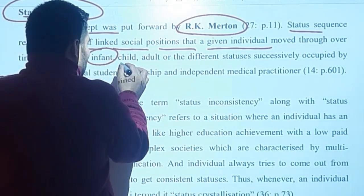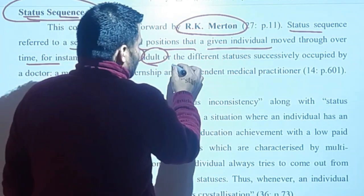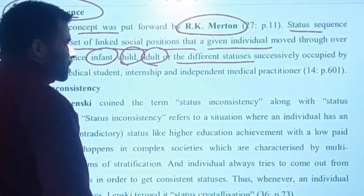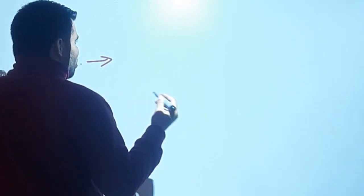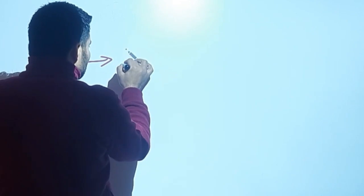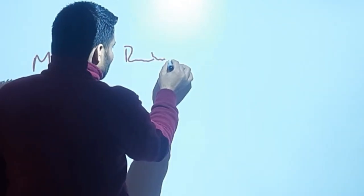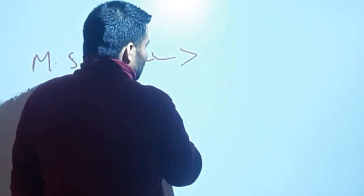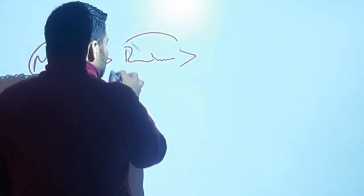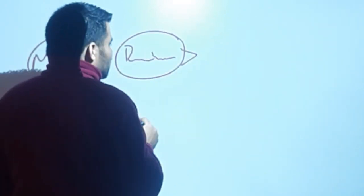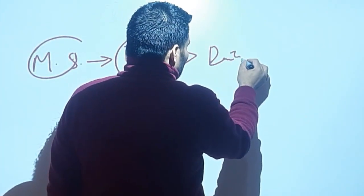First a person is an infant, then a child, then an adult, and then they occupy different statuses in society. For example, first a person is a medical student, then they work hard, qualify their MBBS degree. After qualifying MBBS, they are selected as a doctor, then their internship begins. After training is complete, they become a full-fledged doctor.